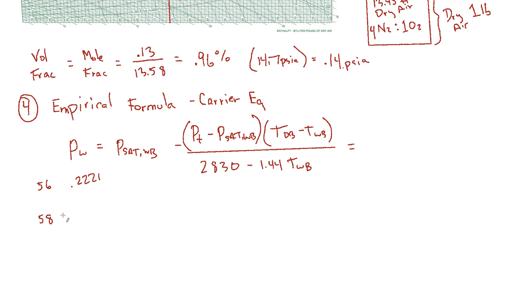But I want to know what it is at 56.4. So I have to interpolate. I can do 0.2387 minus 0.2221. That difference is 166. But I'm spanning two degrees. So that's 83 per degree. And I'm really only interested in the change over four tenths of a degree. So multiply 83 by four tenths. That's 33.2. So it's going to be 2221 plus 33, which is 2254.